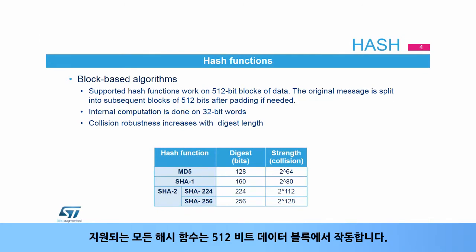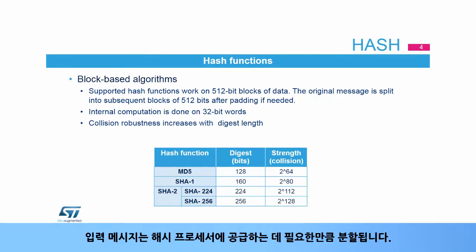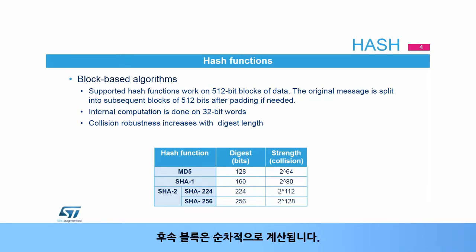All supported hash functions work on 512 bit blocks of data. The input message is split as many times as needed to feed the hash processor. Subsequent blocks are computed sequentially.